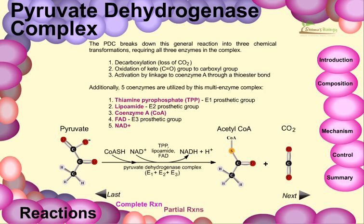The five coenzymes are: first, thiamine pyrophosphate (TPP), which acts as the prosthetic group for enzyme E1; second, lipoamide, which acts as the E2 prosthetic group; third, coenzyme A, needed to attach to pyruvate to produce acetyl-CoA; fourth, FAD (flavin adenine dinucleotide), acting as the prosthetic group for enzyme subunit E3; and fifth, NAD+, acting as a genuine electron carrier.